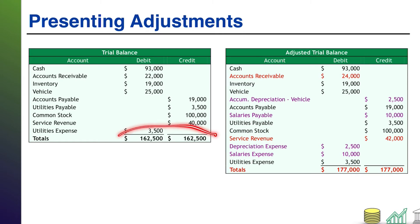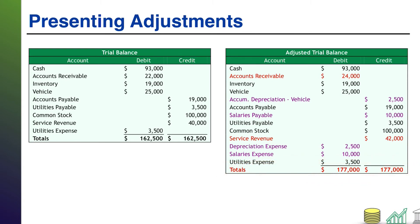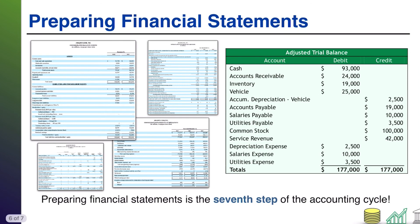Finally, just like with the regular trial balance, you total your debits and credits and make sure they're equal. You are going to total your debits and credits on your adjusted trial balance to make sure they are equal as well. Once you have all of this, you are going to use your adjusted trial balance to prepare your financial statements. The adjusted trial balance simply updates those ending balances for any adjusting journal entries that get made.